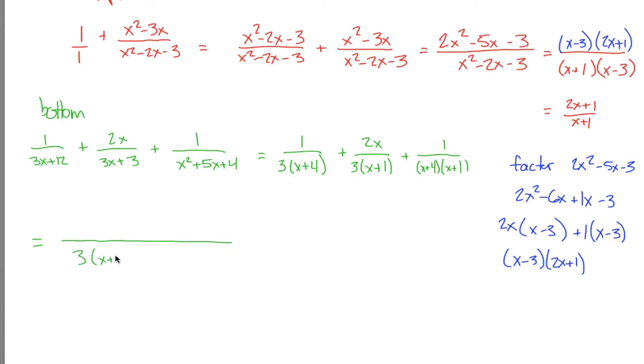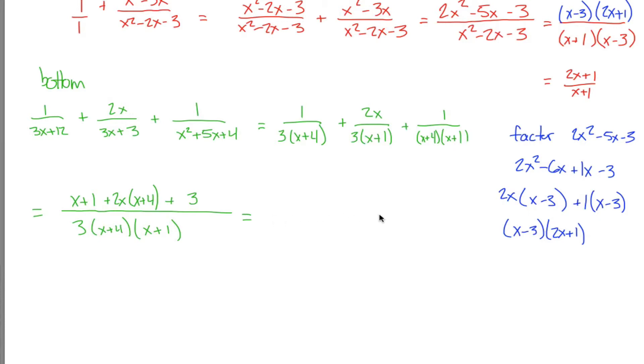My least common denominator is 3 times x plus 4 times x plus 1. However, each of these terms are missing something. To make this one have that denominator, I'll have to multiply the top and the bottom by x plus 1. To make this term have that common denominator, I'll have to multiply the top and the bottom by x plus 4. What that would give me is 2x times x plus 4 on the top, and then this common denominator on the bottom. And finally, to get this one to be 3 times x plus 4 times x plus 1, I'm missing a 3. Multiply the top and the bottom by 3. That'll give me the bottom as this common denominator, and up top it'll give me 1 times 3, which is just equal to 3.